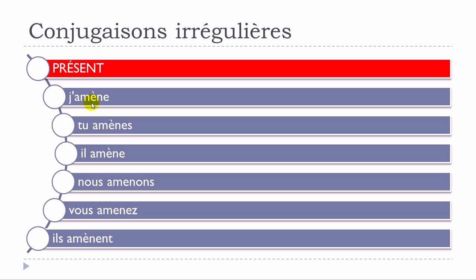The change is only the accent — l'accent grave — on the top of this E. It changes the pronunciation, because you get this open E sound: j'amène, tu amènes, il amène. Nous doesn't change — nous amenons — it's a silent mute E. Vous amenez, exactly the same, you don't pronounce this E. The only thing you have to change is to put this accent grave.